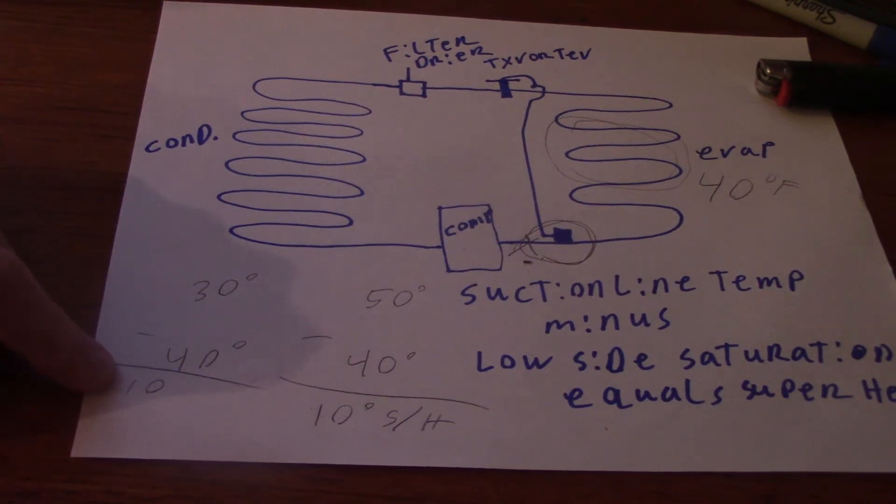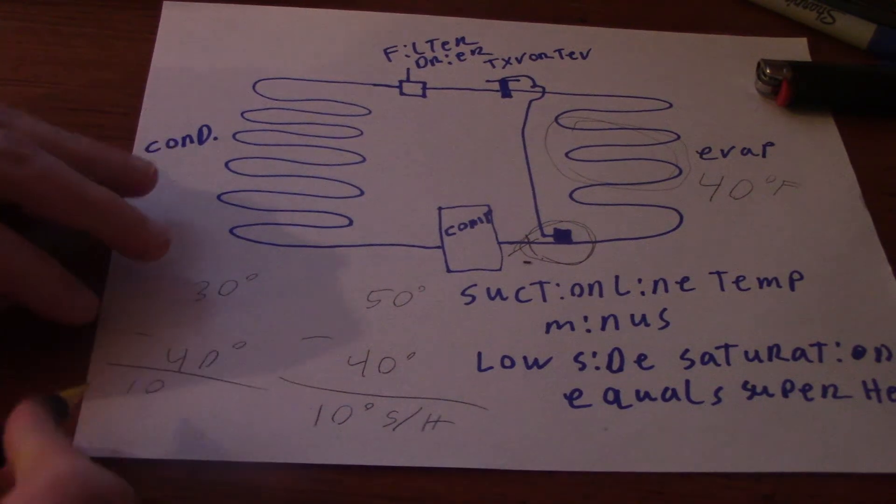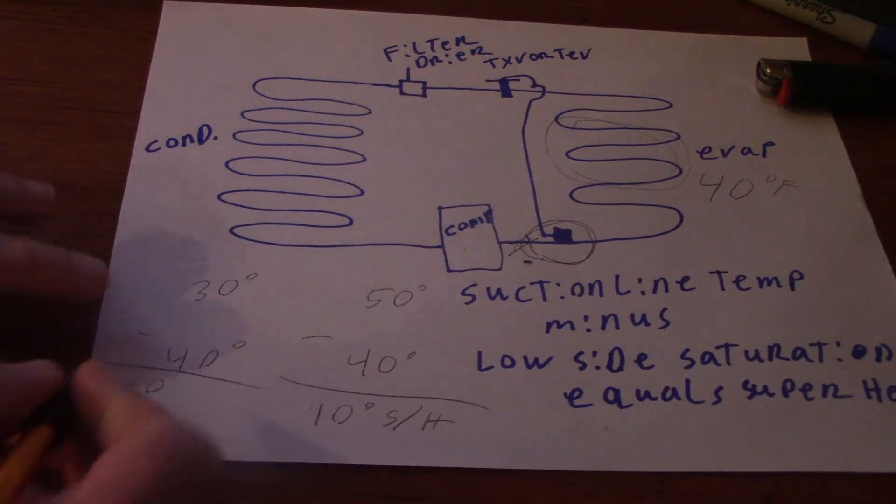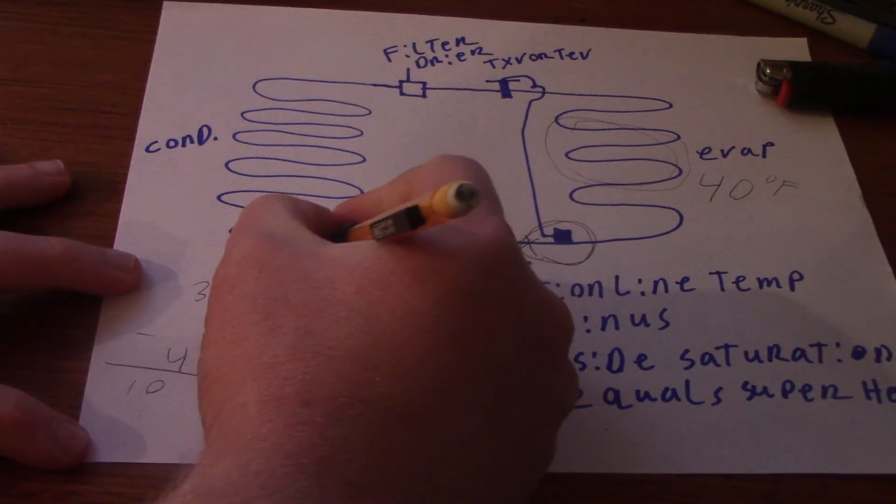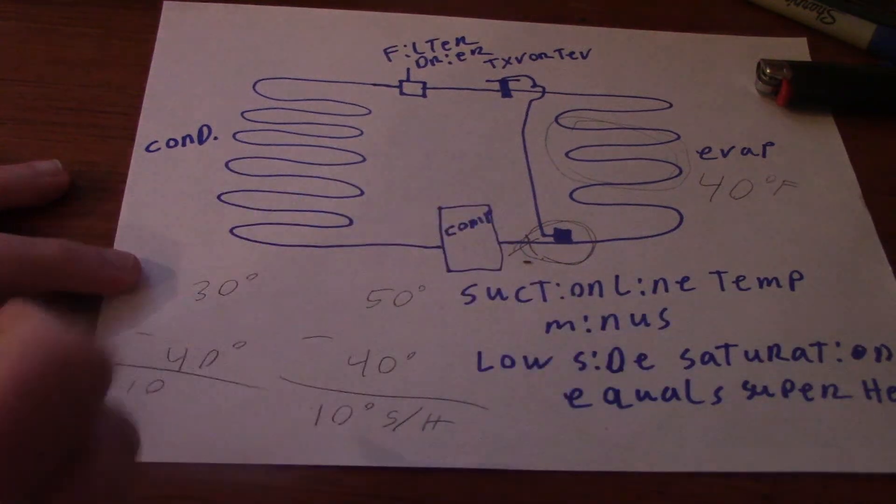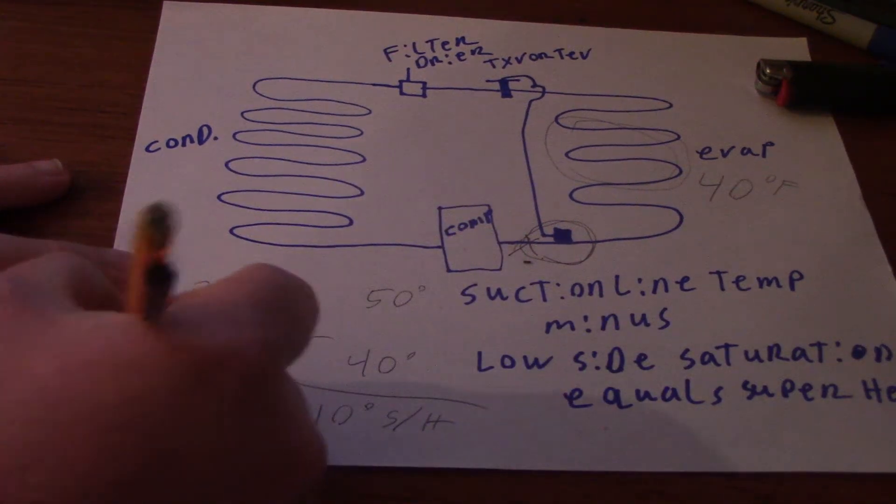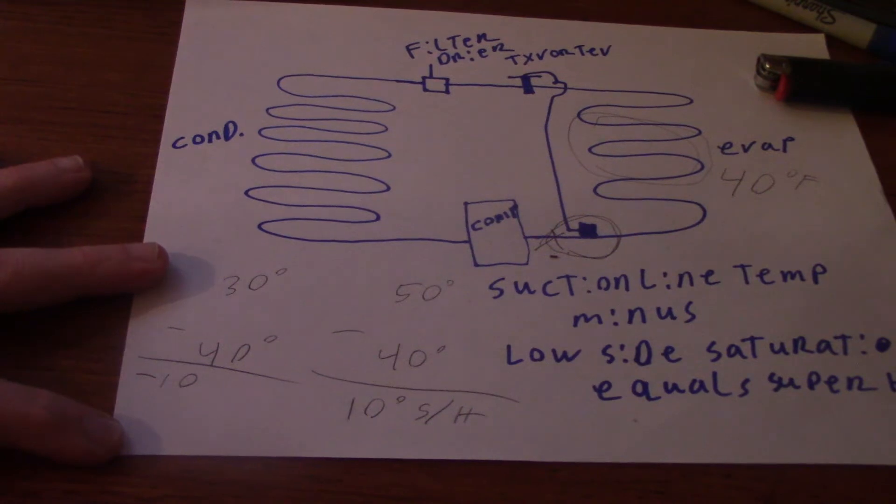hey, this system got to be working okay, because I got 10 degrees superheat. No, you're wrong. You did it backwards, so you got the wrong number. Reality is, you would have 40 minus 30, or 30 minus 40, which means negative 10.